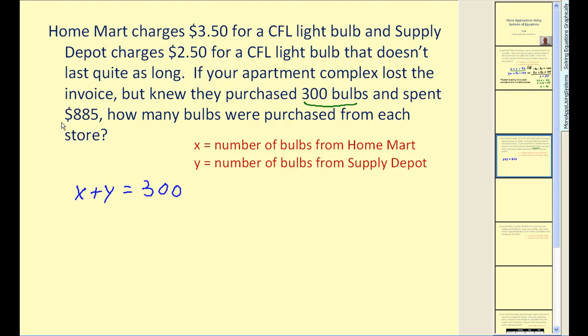Next we're going to have a cost equation. We know they spent $885, but every x costs $3.50. So 3.5 times x plus every y costs $2.50. So that'd be $2.50 times the number of bulbs purchased from Supply Depot must equal $885. So now I'm going to use elimination and I'm going to eliminate the y terms this time. However, I could also use the method of substitution. So if I want to eliminate the y terms, I'll multiply this first equation by negative 2.5 since this is a positive 2.5y. So the result of multiplying everything by negative 2.5 would be negative 2.5x minus 2.5y equals negative 750. We'll leave the second equation in its original form.